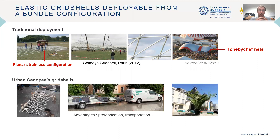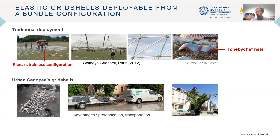At Urban Canopy, we use elastic grid shells to help vegetalize urban areas. And we are actually not so interested in these planar strainless configurations, but rather in having a very compact one. This is to simplify transportation to sites such that we have as little work to do on site. We can maximize prefabrication. And you see that here we have a very different geometrical constraint from regular grid shells — we want a grid shell that can be put in a bundle.